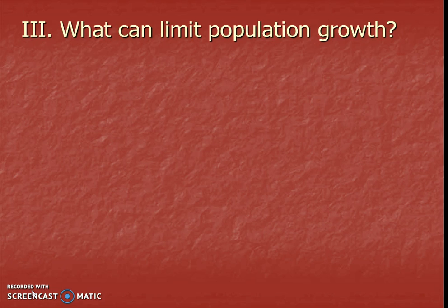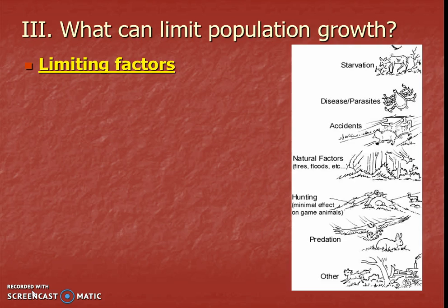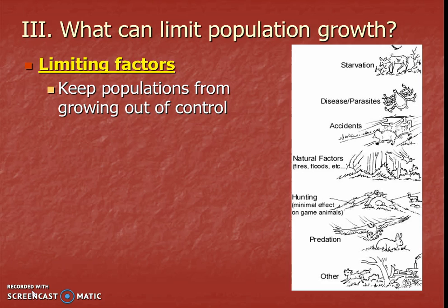So what are these things that can limit population growth? We call them limiting factors, and that's our first vocab word today. Here are some examples of limiting factors — things like food that could cause starvation, disease, etc. All of these things can keep a population from growing out of control. It is not good to have too small of a population, but it's also not great to have too big of a population.